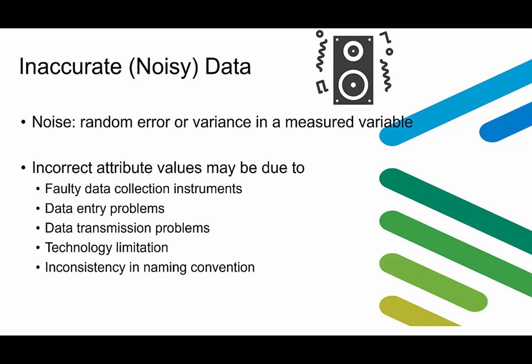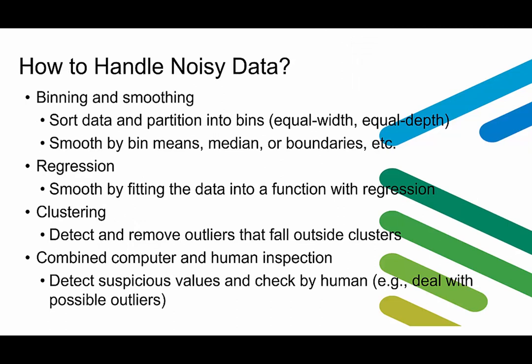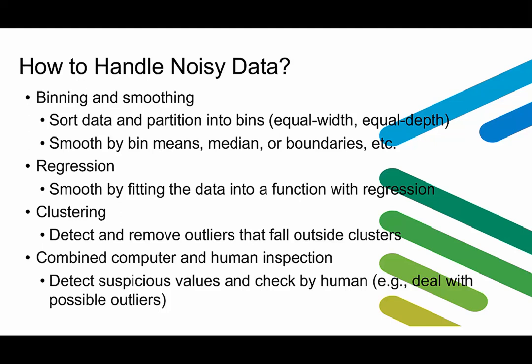In terms of inaccurate or noisy data, it means random error or variance in a measured variable. Similar to the reasons for missing data, incorrect attribute values may be due to faulty data collection instruments, data entry problems, data transmission problems, technology limitations, or inconsistency in naming conventions. To handle noisy data, we can do binning and smoothing: sort data and partition them into bins by equal width or equal depth, then smooth the data by bin means, median, or boundaries. We can also adopt regression to smooth data by fitting it to a function. We can do clustering to detect and remove outliers. Lastly, we can combine computer and human inspections to detect suspicious values such as outliers.